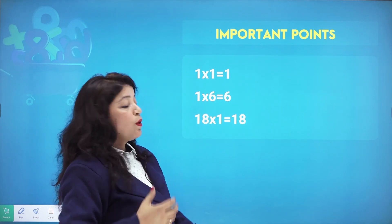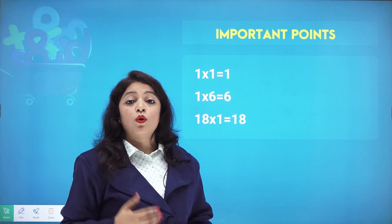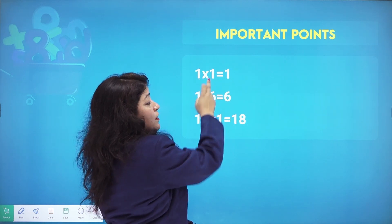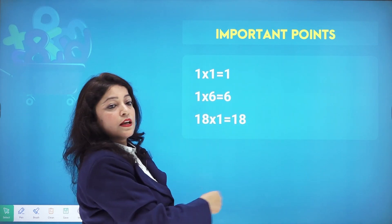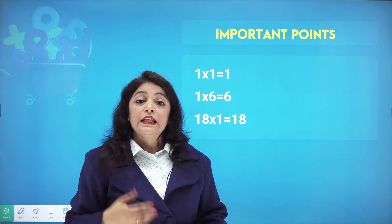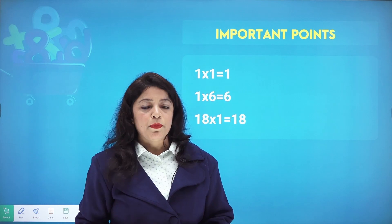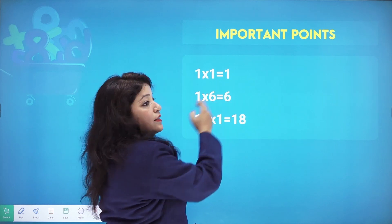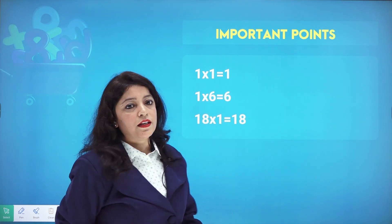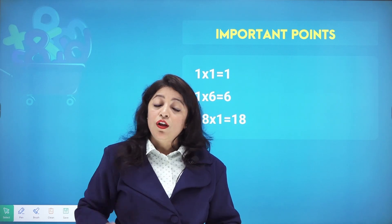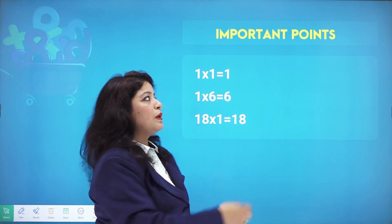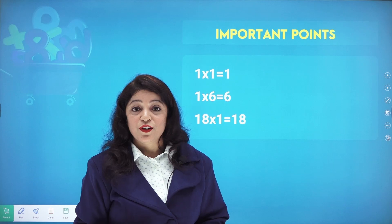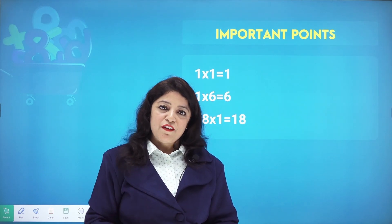One key point: 1 times 6 gives 6, and 1 times 18 gives 18. So 1 is a factor of 1, of 6, and of 18. This means 1 is a factor of every number. Also, if you multiply any number by 1 you get that number, so a number always has at least two factors: 1 and the number itself.